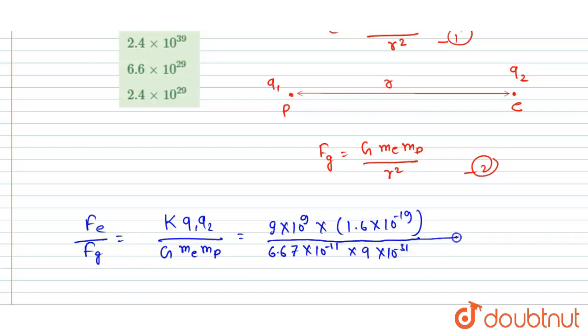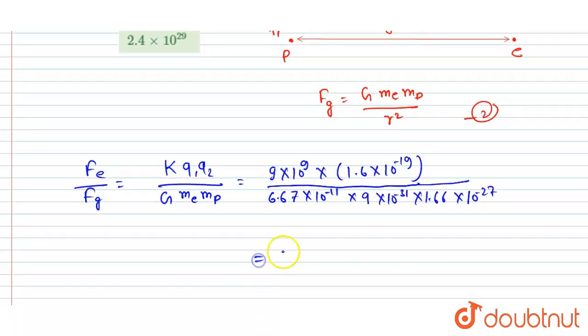And mass of proton is 1.66 × 10⁻²⁷. So if you will solve this you will get the ratio as 2.4 × 10³⁹. So this will be the answer of this question.